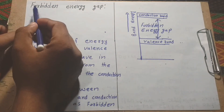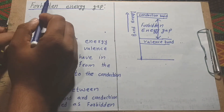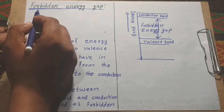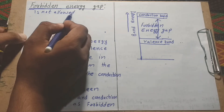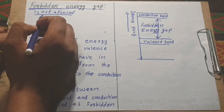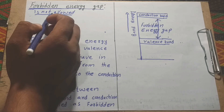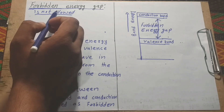Assalamu alaikum, my dear students. Today our topic is forbidden energy gaps. First, to understand what is 'forbidden': something is not allowed. For example, something forbidden is opening a door that your brother has told you not to touch — we observe it but are not allowed to touch it. That is forbidden.